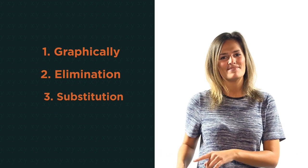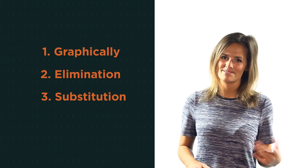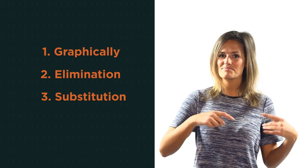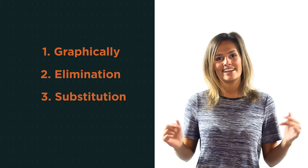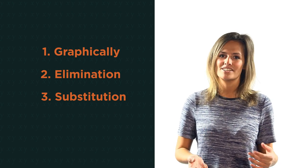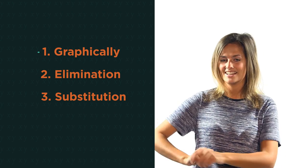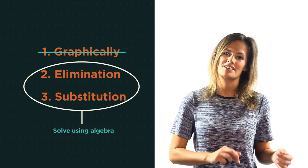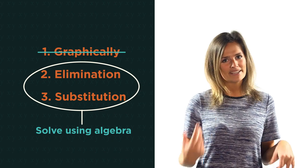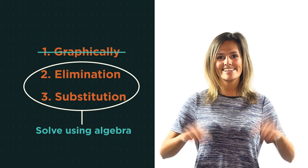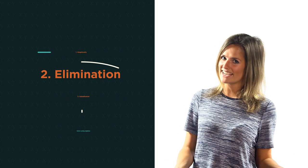There are three different methods we can use to solve simultaneous equations. We can solve them graphically and see where they cross each other, but this is really slow and actually only works if they cross at an exact point. The other two methods involve solving algebraically, by elimination or by substitution. In this video we're going to discover how to use elimination.